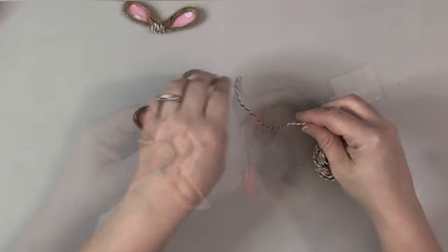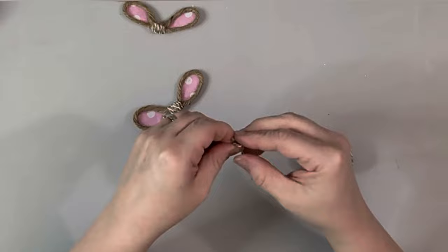Next, I take the twine again and cut a little piece, and make a tiny little bow. And I make three of those and hot glue each of them to the little ears.